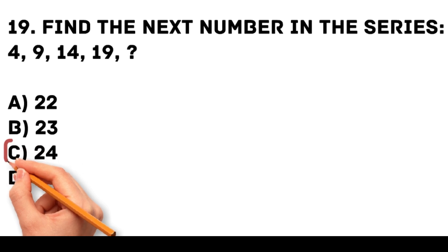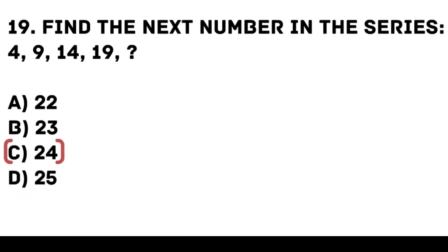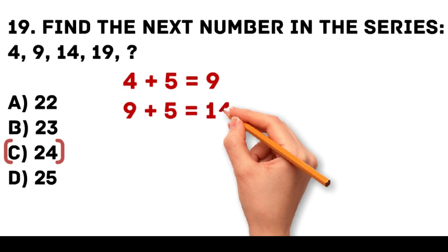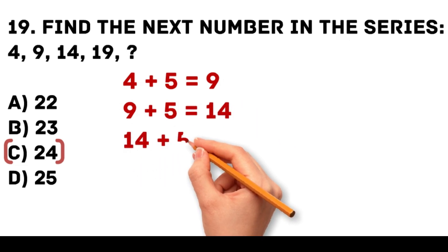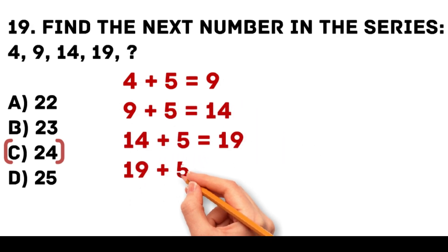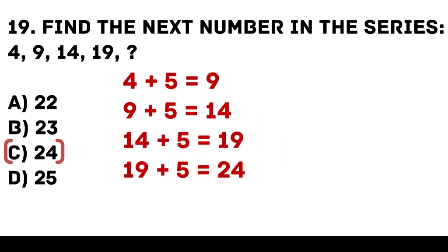Answer: C. 24. Each number in the series is increased by 5. 4 plus 5 is equal to 9. 9 plus 5 is equal to 14. 14 plus 5 is equal to 19. 19 plus 5 is equal to 24.